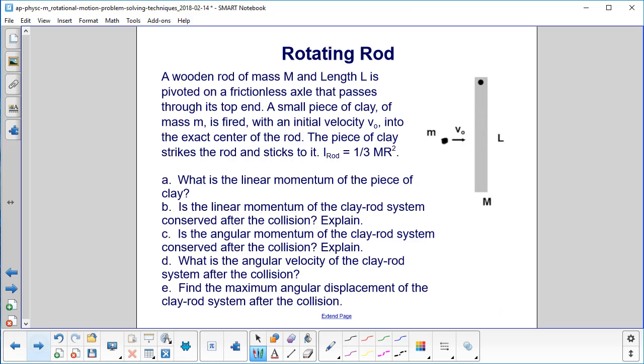Rotating rod. We have a wooden rod of mass m and length l, and it's placed on a frictionless axle up here that passes through its top end. A small piece of clay is fired with an initial velocity v0 into the exact center of the rod. The piece of clay strikes the rod and sticks to it.